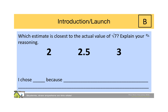Students can choose 5 because the square root of 25 is 5 and 24 is very close to 25. For the square root of 7, students may say 7 is just a little over halfway between 2 squared and 3 squared, and that's why they would choose 2.5. For the square root of 42, students may say 42 is almost halfway between 6 squared and 7 squared, and that's why they would choose 6.5.